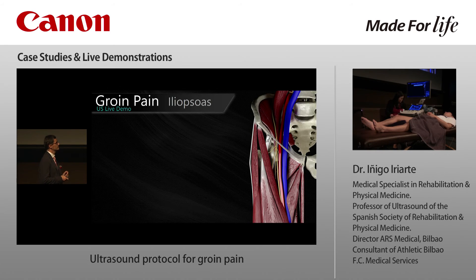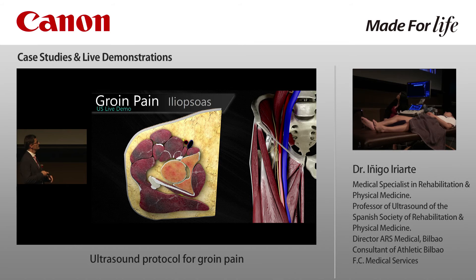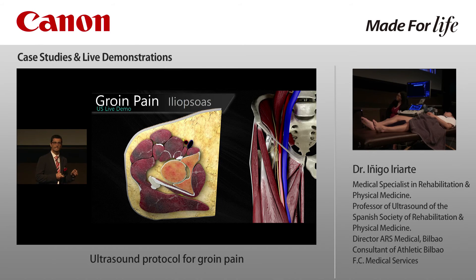We will place the probe over the anterior inferior iliac spine and then move medially. We will find a thick tendon, very close to the hip joint, just beneath. This is the psoas major tendon. It usually has a very small muscle, the psoas major muscle. And lateral, we will find this big muscle, which is the iliac muscle.